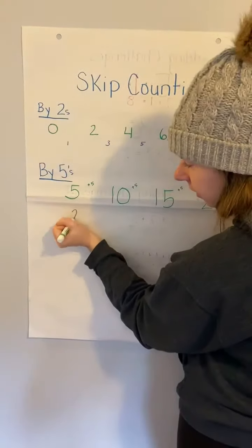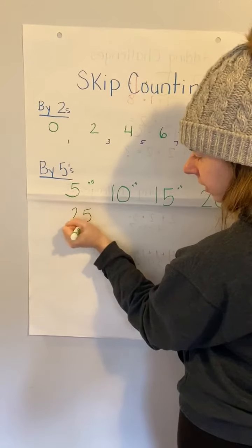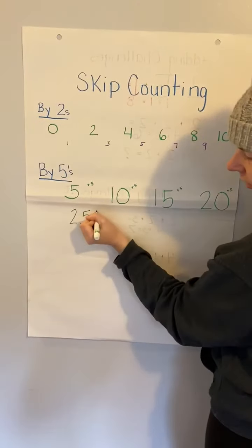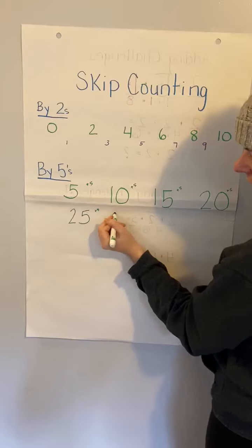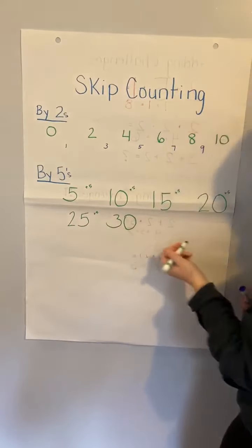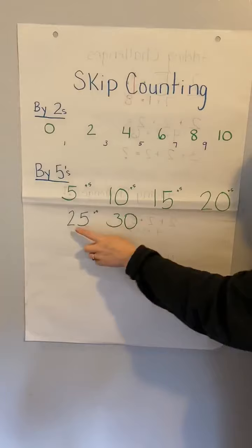Fifteen plus five, twenty-five. We add another five to that, we have thirty and so on and so on and so on. Do you see how the pattern keeps going? Ending in a five and a zero.